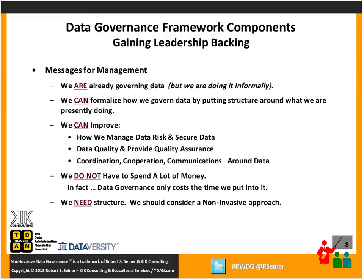The third message is we can improve how we manage risk, secure the data, improve quality and provide quality assurance, and improve coordination, cooperation, and communications around data if we just know who does what with data across the organization. We identify people with levels of responsibility as decision makers. I'll talk about the need for a strategic level data governance council, a tactical layer of subject matter experts or domain stewards, and the formalization of accountability at the operational level. If we formalize people's behavior associated with the data, we can manage data risk, secure the data better, improve quality, and improve coordination, cooperation, and communications.